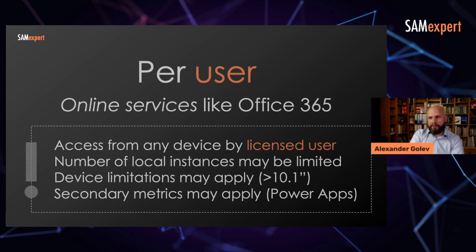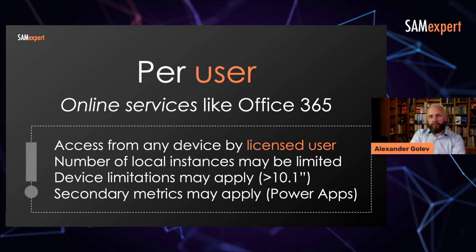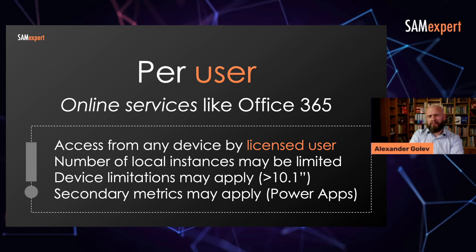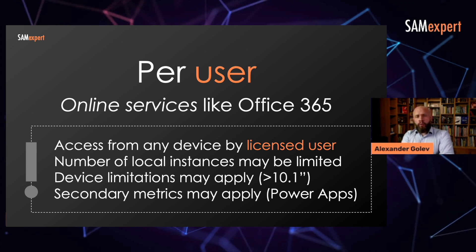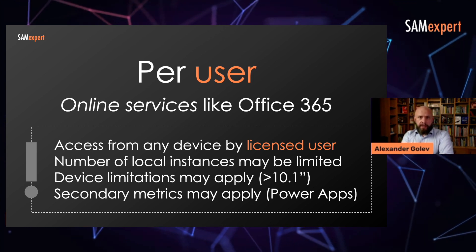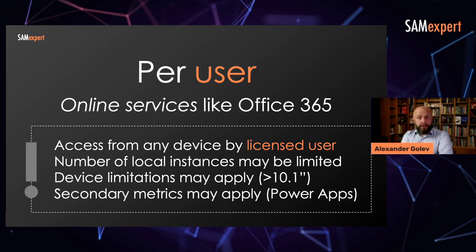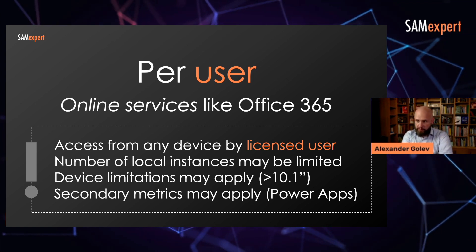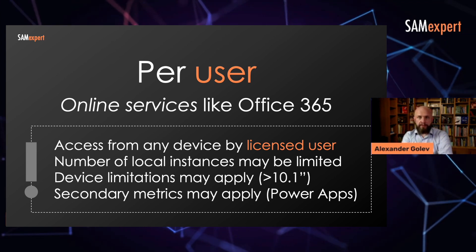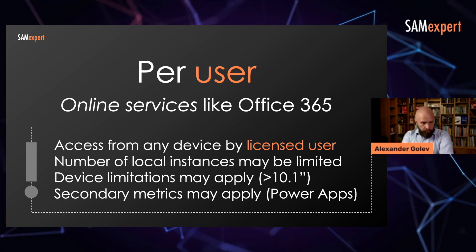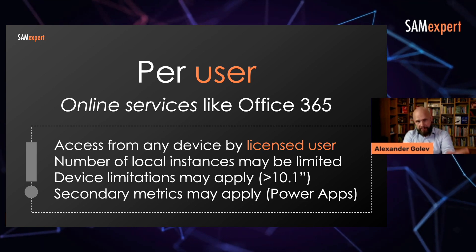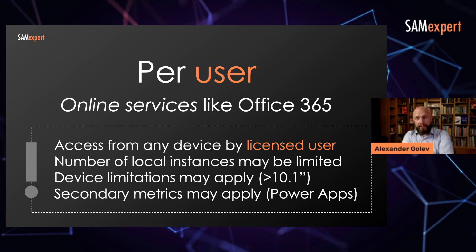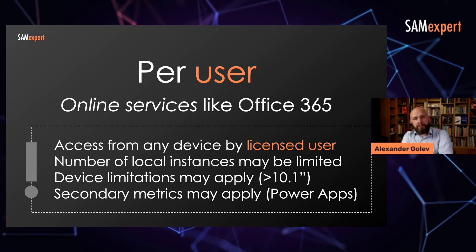Per user — think Office 365. Although there are plans where you can buy per-device licenses, Office 365 is majorly per user. You have a licensed user, and that user may access online services from any licensed device. The number of local instances of software may be limited — it may be zero, it may be five. Look at the terms of the specific subscription to see if you're allowed to download and install Office on your device and how many installs are permitted. Device limitations may apply.